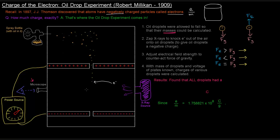The oil droplets would then be carrying a negative charge as they fell. They'd zap x-rays to knock electrons out of the air onto the oil droplets, giving them a negative charge. There were two metal plates on the way down — a top plate and a bottom plate — both linked to a power source. When power was applied, a voltage would be applied between the two plates, creating an electrical force. Since the oil droplets were negatively charged, that force would have an impact on them.